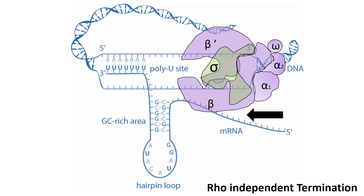The second type is rho-independent termination, where a palindromic sequence forms a hairpin loop that prevents the RNA polymerase from moving further forward. Additionally, there is a poly-U stretch where the adenine-uracil bonds are relatively weak, allowing the mRNA to fall out of the DNA easily.